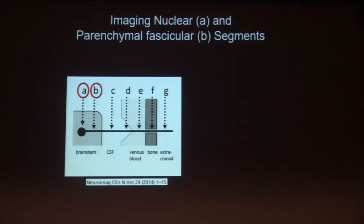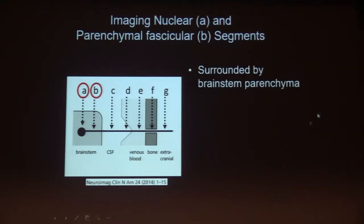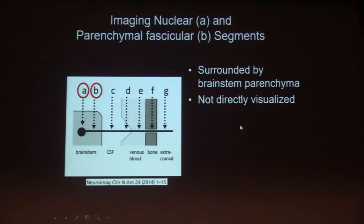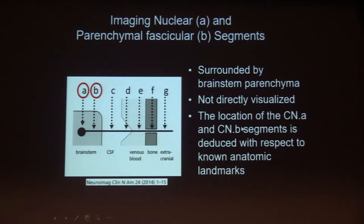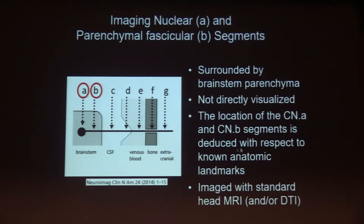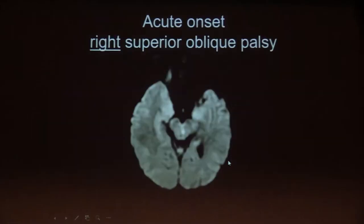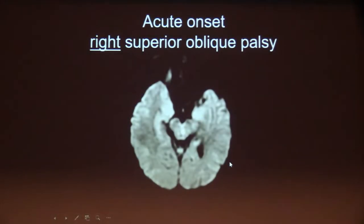A few words about the A and B segments. The A and B segments — the nuclear and parenchymal fascicular segments — are surrounded by the brainstem and not directly visualized typically, except sometimes we can see the region on diffusion tensor imaging. We can infer their location based on known anatomic landmarks, and we evaluate these with the standard brain MRI.